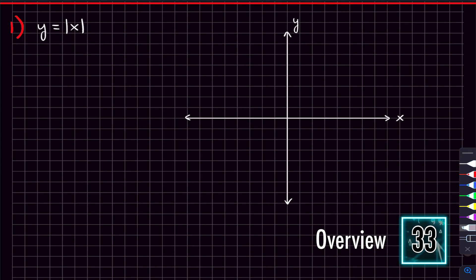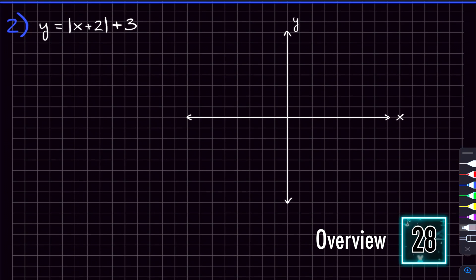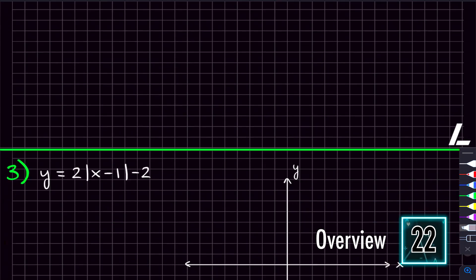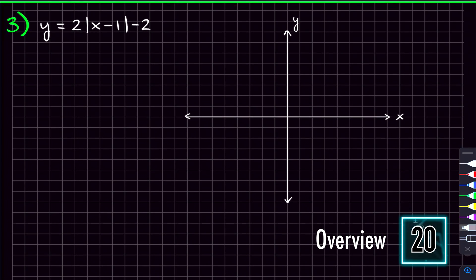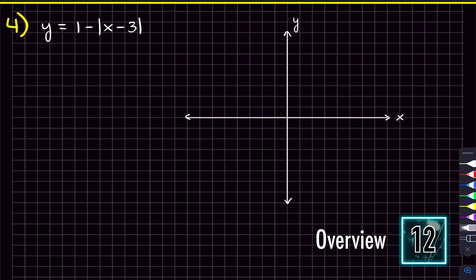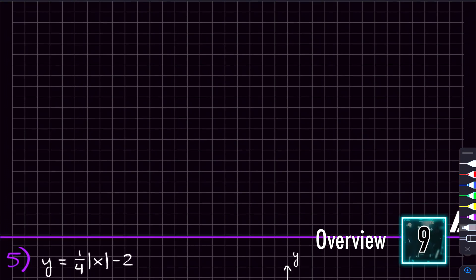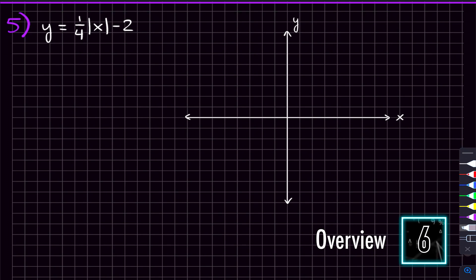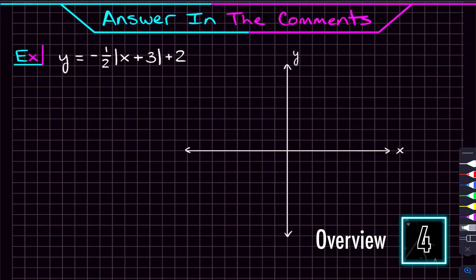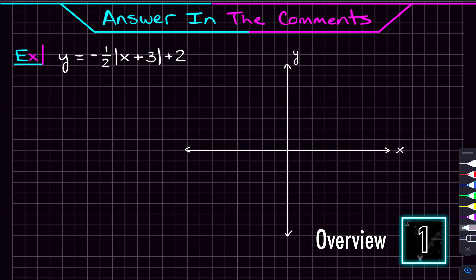By the end of this video, you're going to be graphing absolute value functions at the speed of light. In about 30 seconds, here's how this video is going to get you there. We'll start by graphing the absolute value of x, then talk about adding and subtracting numbers inside and outside the absolute value, then what happens when a number is multiplied out front, and then some more complex examples. I'll also give you a problem to try and answer in the comments, and by that point it should honestly be breezy.